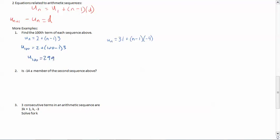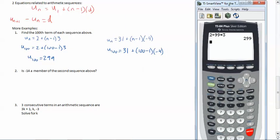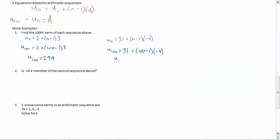So u₁₀₀ equals 299. Easy, huh? Let's do it for the other one. So u₁₀₀ equals 31 plus 100 minus 1 times negative 4. And again, we'll call up our calculator, which we'll move to this side so we can see it a little bit better. We'll go 31 plus 100 minus 1, which is 99, times negative 4. And there we go. We got negative 365.